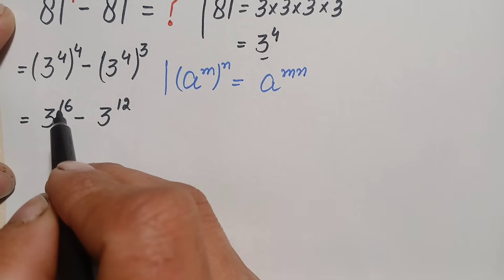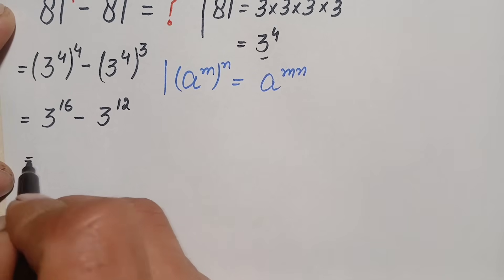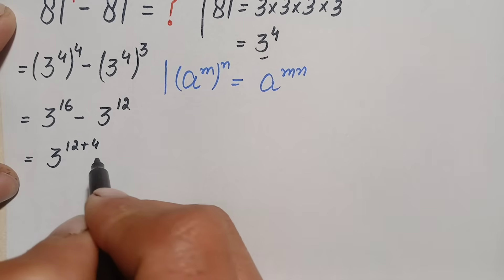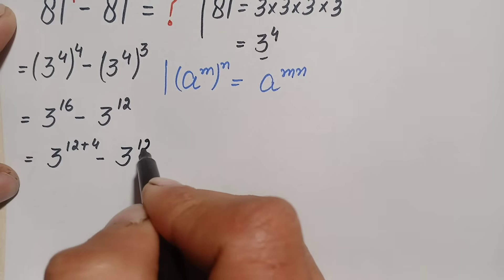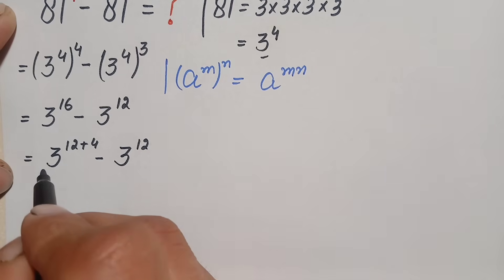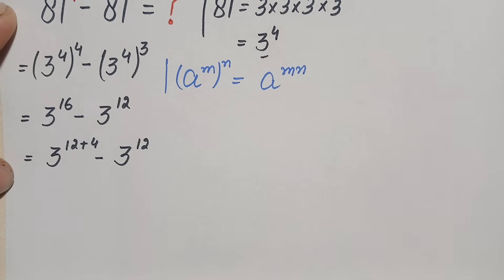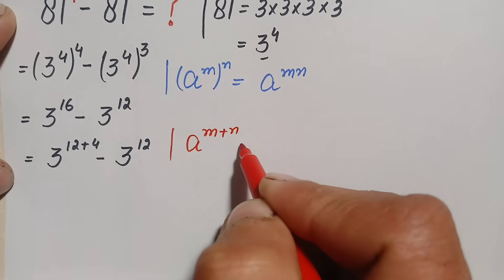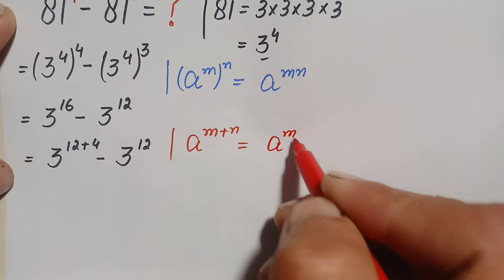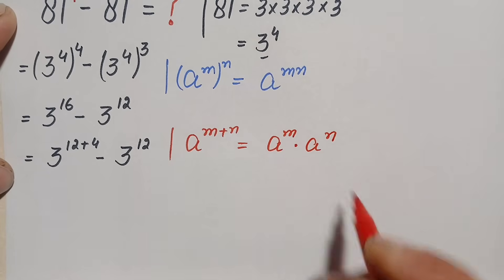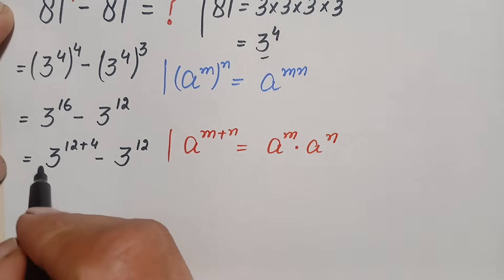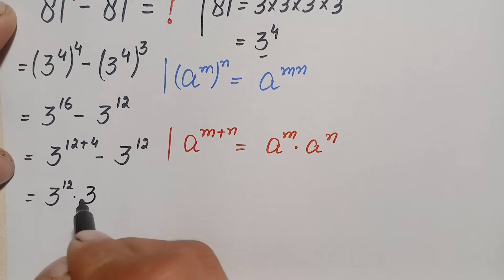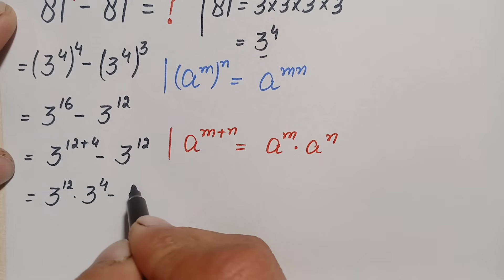We can write the first term 3 to the power 16 as 3 to the power (12 plus 4), minus 3 to the power 12. Now using the identity a^(m+n) = a^m times a^n, this term becomes 3 to the power 12 times 3 to the power 4, minus 3 to the power 12.